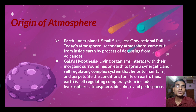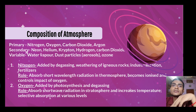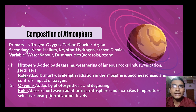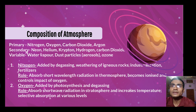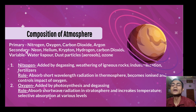Earth comprises four main spheres: hydrosphere, atmosphere, biosphere, and lithosphere. Now, what is the composition of the atmosphere — what is it made of? Atmosphere has primary components, secondary components, and variable components. Primary ones are nitrogen, oxygen, and carbon dioxide. Secondary ones are neon, helium, krypton, hydrogen, and carbon dioxide. Variable components include water vapor, dust particles (called aerosols), and ozone.